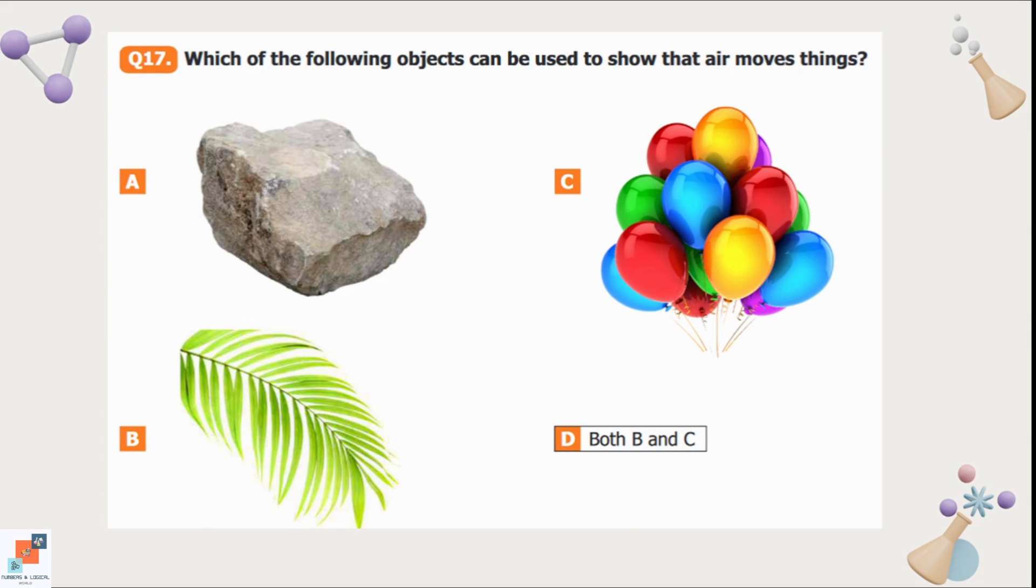Question number 17: Which of the following objects can be used to show that air moves things? We cannot move stone by air. But option B and C, leaves and balloons, as they are light weighted, air can move them from one place to another. So option D is the correct option.